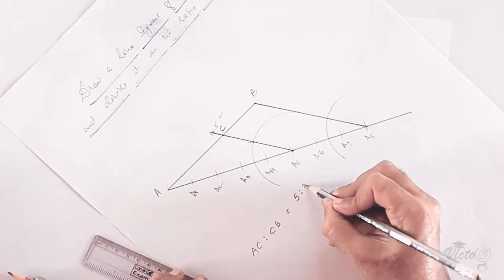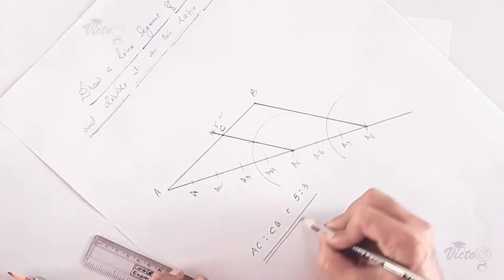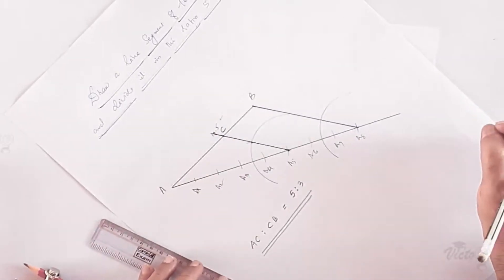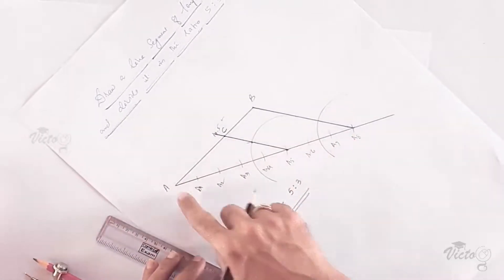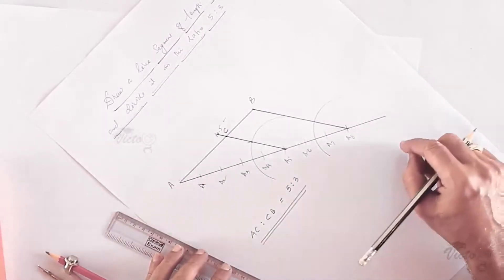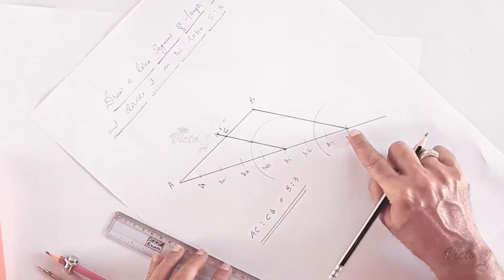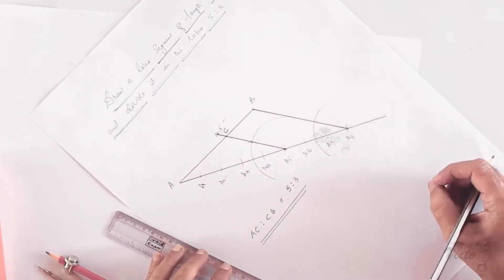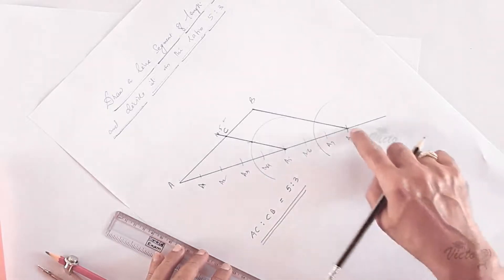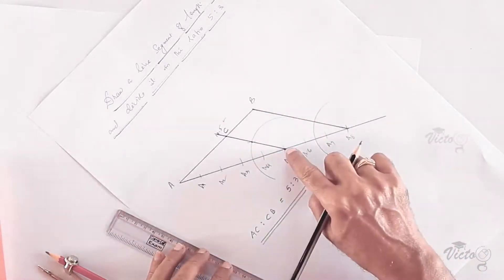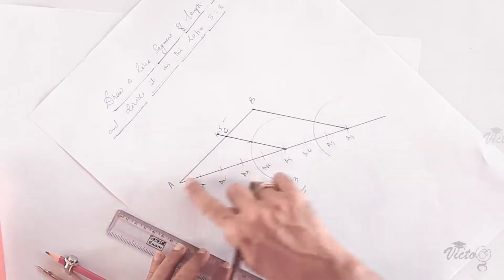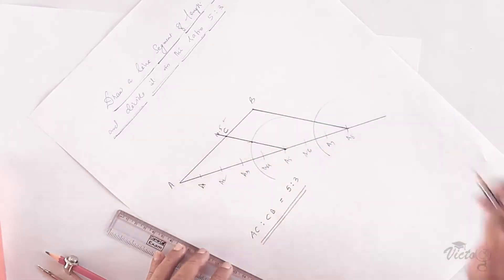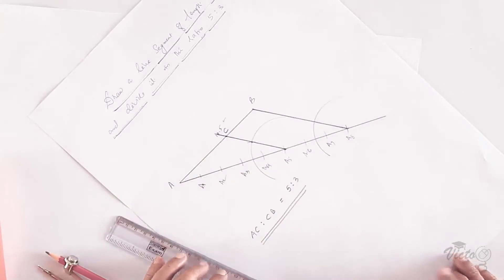To summarize: first draw line segment AB of length 10.5 centimeters. Then at any angle theta draw another line and divide it into 8 equal parts. Join the eighth division a8 to end point B. Draw a line through a5 parallel to a8B, intersecting AB at C. Then AC is to CB equals 5 is to 3. This completes the construction.